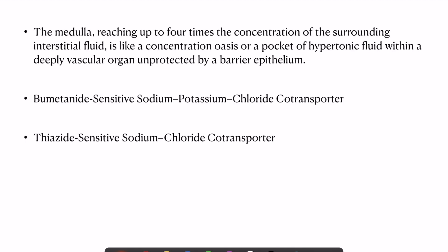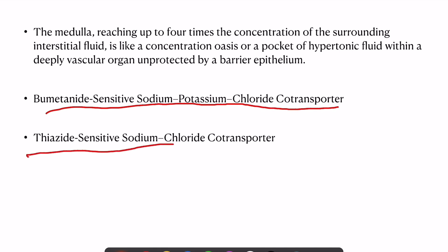Now let's look at the kidney's role. The medulla of the kidney reaches up to four times the concentration of the surrounding interstitial fluid — it is a concentration oasis with hypertonic fluid within this deeply vascular organ, unprotected by barrier epithelium. Two important transporters are present in the ascending limb: the bumetanide-sensitive sodium-potassium-chloride co-transporter and the thiazide-sensitive sodium-chloride co-transporter. Blockers of these transporters are used as diuretics.